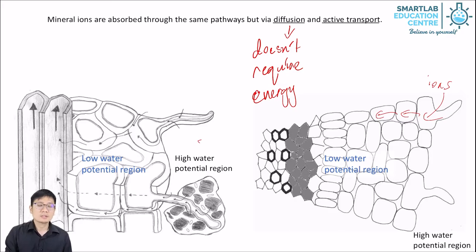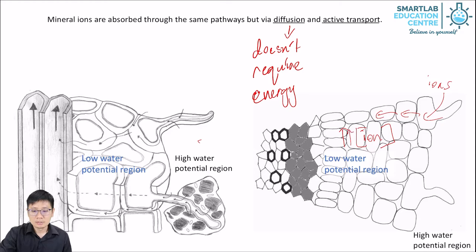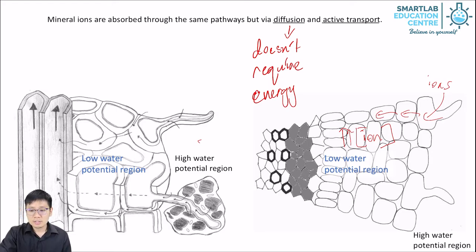This is the case if the ion concentration is higher in the soil. But most times a plant will have accumulated a lot of ions, so the concentration of ions inside the plant will be higher. If the ion concentration inside the root is higher than the soil's concentration, then the root cells will transport the ions inside by active transport.